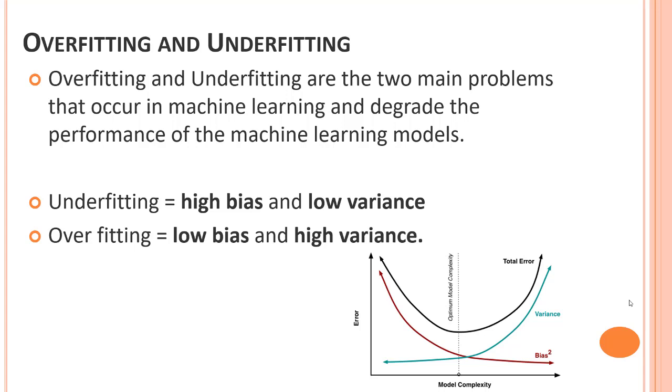The last topic of this section is overfitting and underfitting. Overfitting occurs when our machine learning algorithm tries to cover all the data points or more than the required data points represented in the given dataset. Because of this, the model starts catching noise and inaccurate values present in the dataset, and all of these factors reduce the efficiency and also the accuracy of the model. The overfitted model has low bias and high variance.